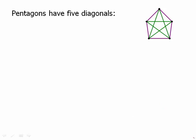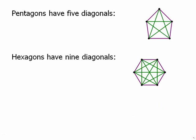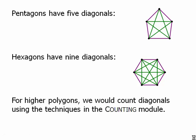Pentagons have five diagonals. Hexagons have nine diagonals. For higher polygons we could count diagonals using the techniques in the counting modules. That actually becomes a much harder problem to figure out. Say how many diagonals does a polygon with 20 sides have. That's something we're not going to worry about right now. We're going to wait till we get to the counting problems. That's really much more a counting problem rather than a geometry problem.